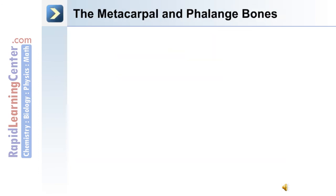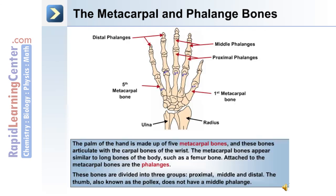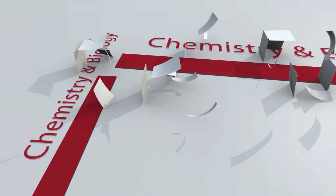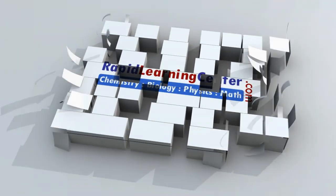At the distal end of the upper extremity is the hand, made up of the metacarpal and phalange bones. The palm of the hand is made up of five metacarpal bones, and they articulate with the carpal bones of the wrist. The metacarpal bones appear similar to a long bone of the body, such as the femur, and are numbered one through five, beginning at the thumb and moving laterally. Attached to the metacarpal bones are the phalanges, divided into three groups: the proximal, middle, and distal phalanges. The thumb, also known as the pollux, does not have a middle phalange; instead, it is made up of a proximal and a distal phalange.